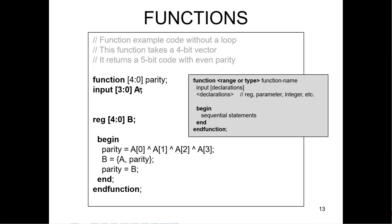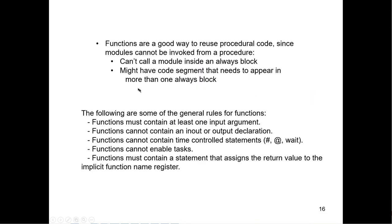Here's a parity function. It's going to return five bits, but the input is four bits — it's going to add a parity bit as the low-order bit, using a four-input exclusive OR. You write: Y = parity(X), where X is a four-bit vector, and Y would be a five-bit vector with the appended parity bit. Functions are a good way to reuse procedural code since modules cannot be invoked from a procedure — inside an always block, you can't call a module, but you can call a function.